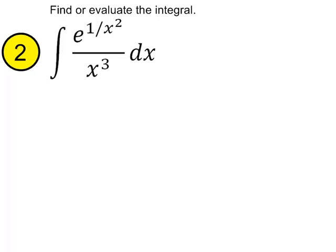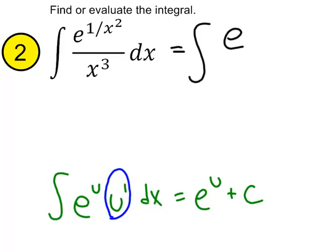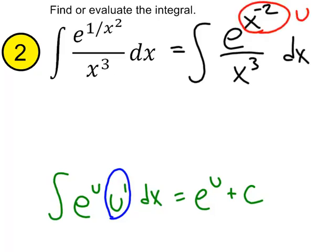As a general rule of thumb, when you've got an exponential function in the integrand, really focus on that first. Think about needing the format where you've got e to the u and then u-prime sitting right next to it. We might prefer to rewrite this integral as e to the x to the negative 2 power over x cubed dx. When we envision x to the negative 2 as our u value, then u-prime would equal negative 2x to the negative 3.